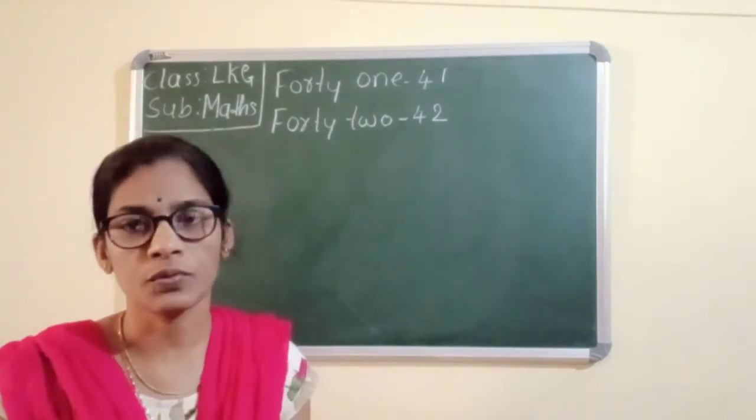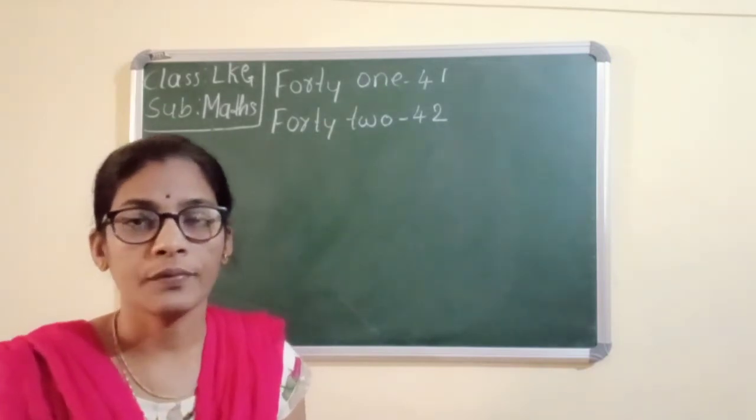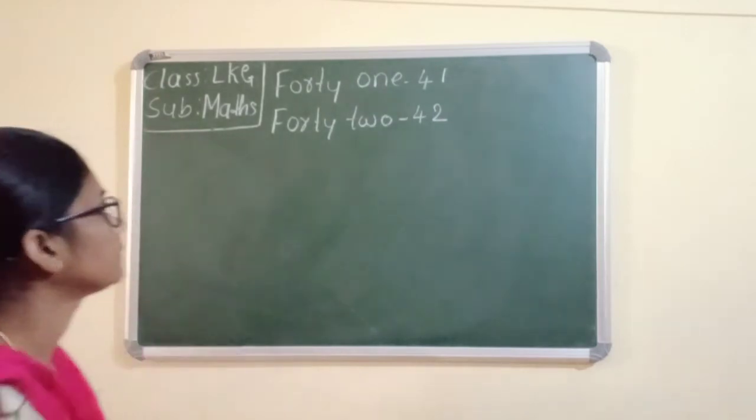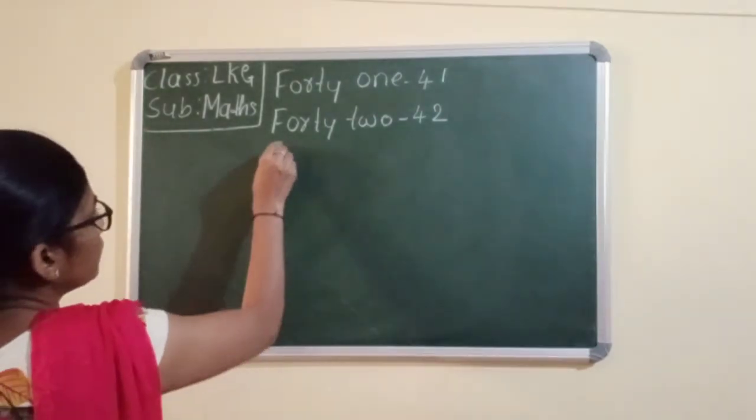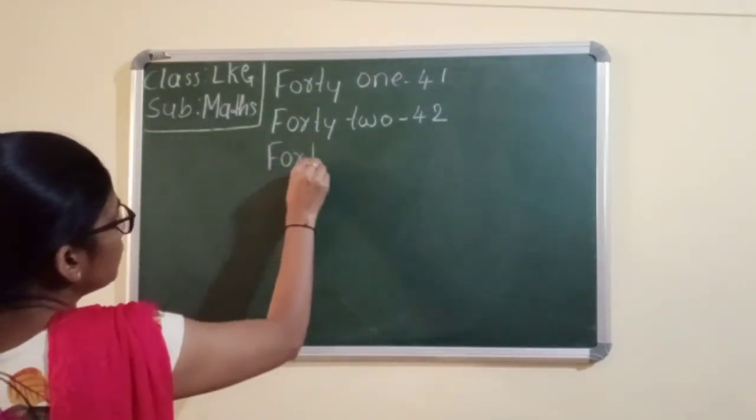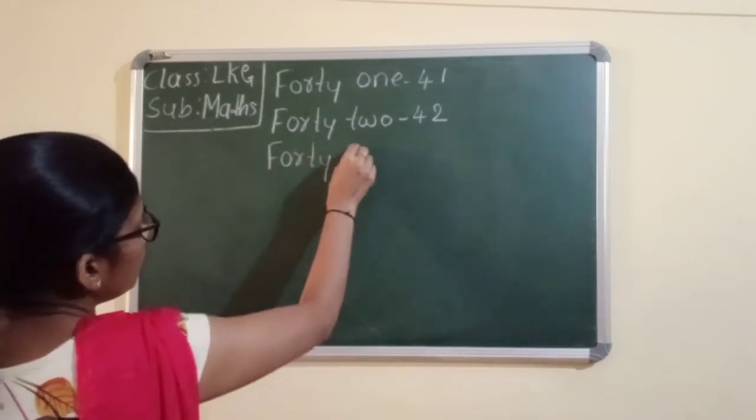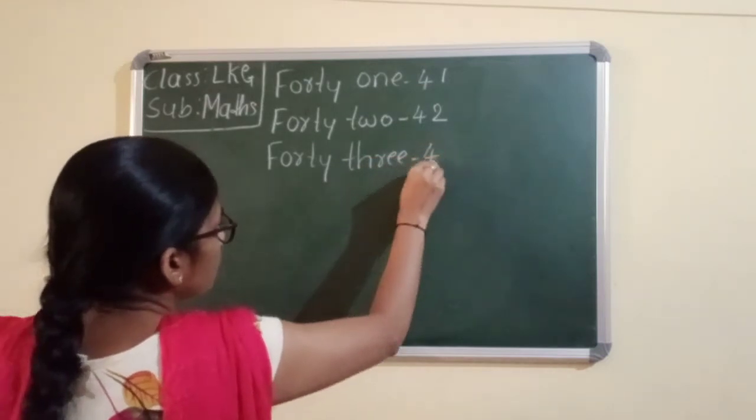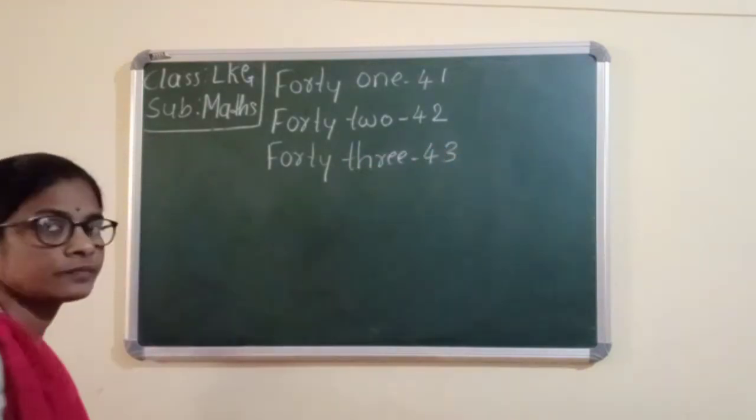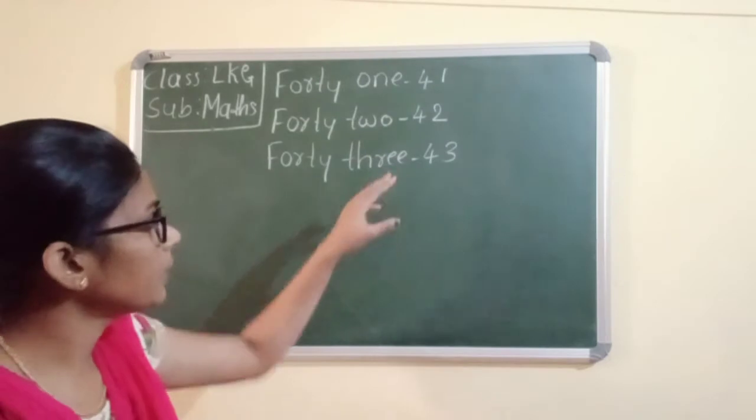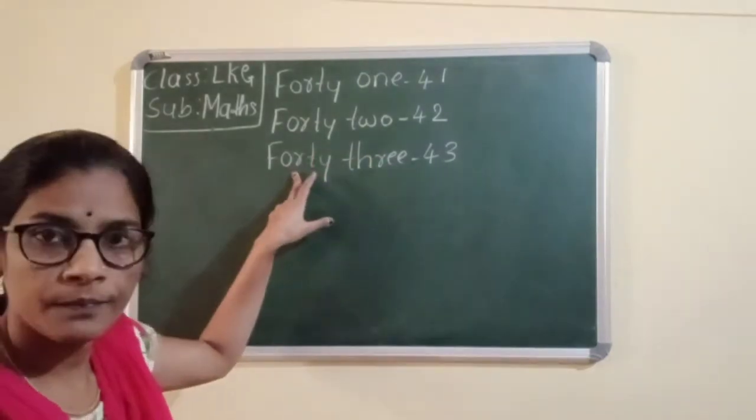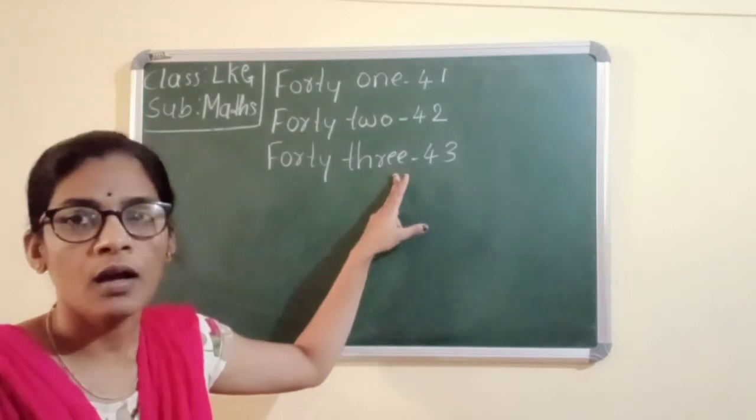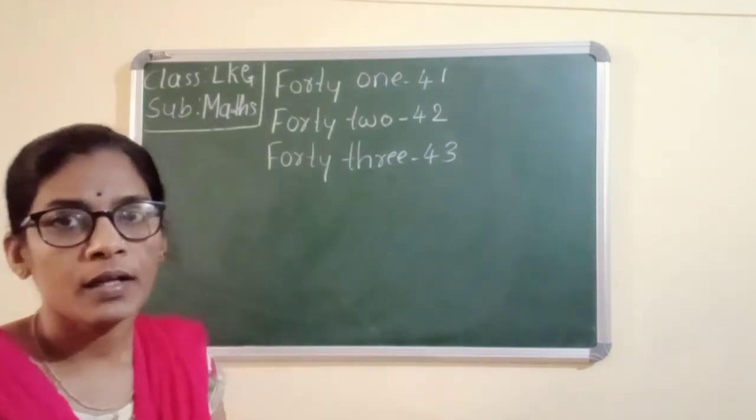43. Same, you should write first 40, and after you write 3, T-H-R-E-E, three. F-O-R-T-Y, forty. T-H-R-E-E, 43. This is the spelling of 3, this one 40. 43. Easy. You should write the spellings also and the writing.